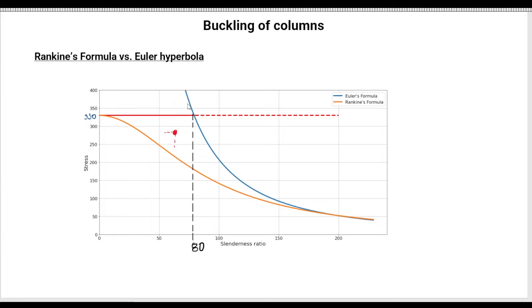For example, this red line and blue line form the Euler formulation or Euler hyperbola here. These are real values. This blue curve here comes from the Euler formulation. And this orange line here comes from Rankine's formulation. So you see how it cuts a lot the range of usability of certain columns.